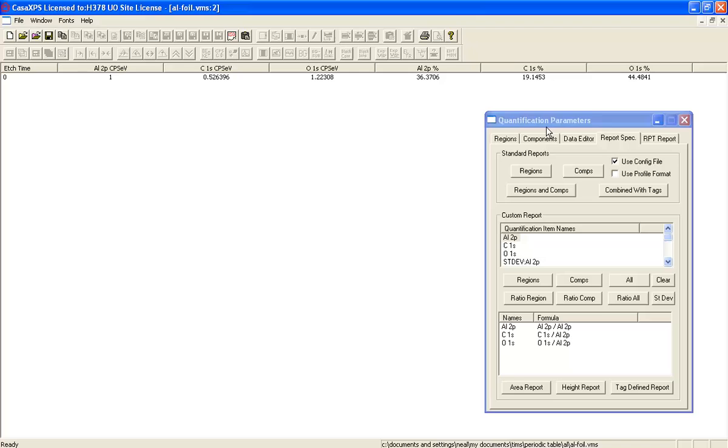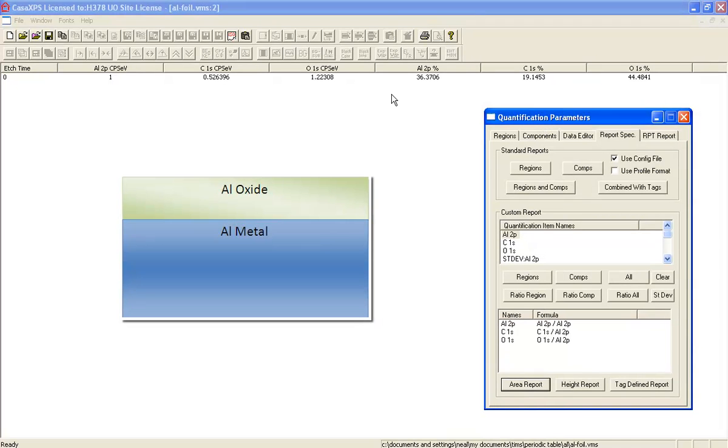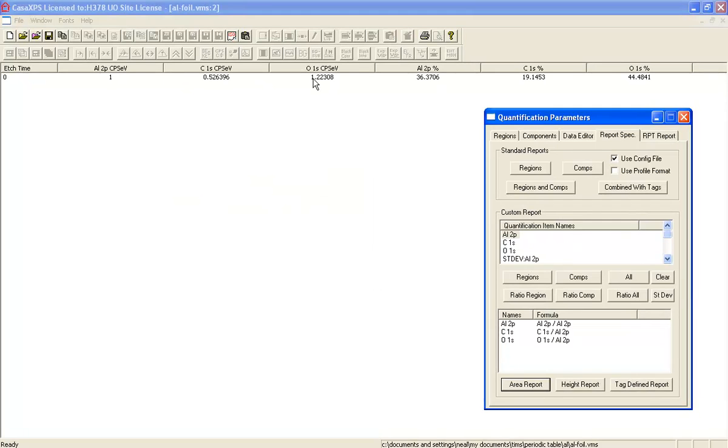I press the area report, and you can now see that the ratio of oxygen to aluminum is 1.22.